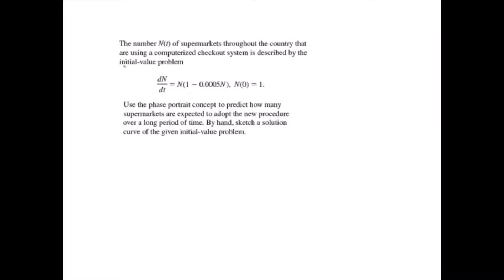The number n of t of supermarkets throughout the country that are using a computerized checkout system is described by the initial value problem: dn/dt equals n times 1 minus 0.0005n, where n of 0 equals 1. Use the phase portrait concept to predict how many supermarkets are expected to adopt the new procedure over a long period of time.